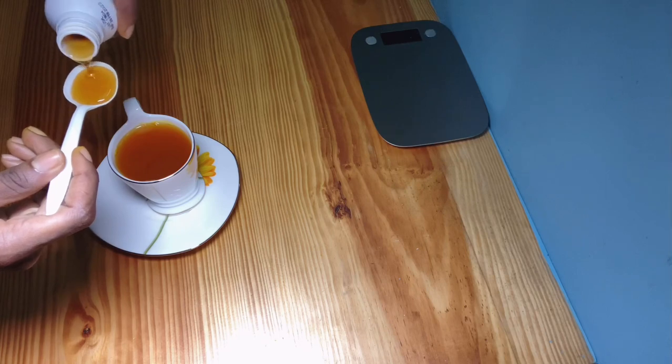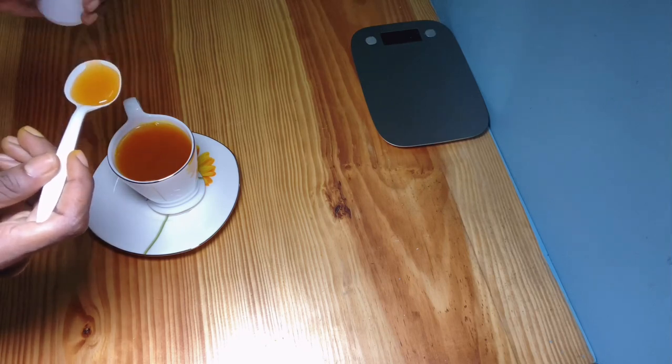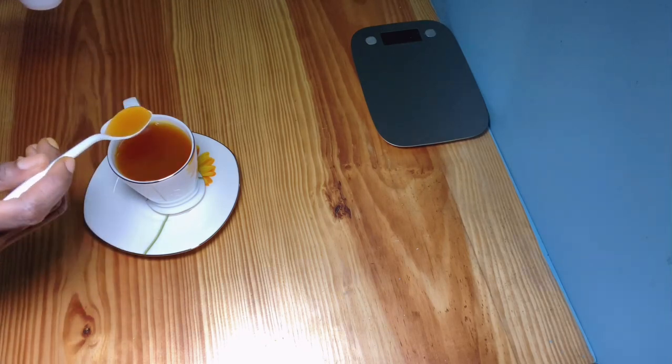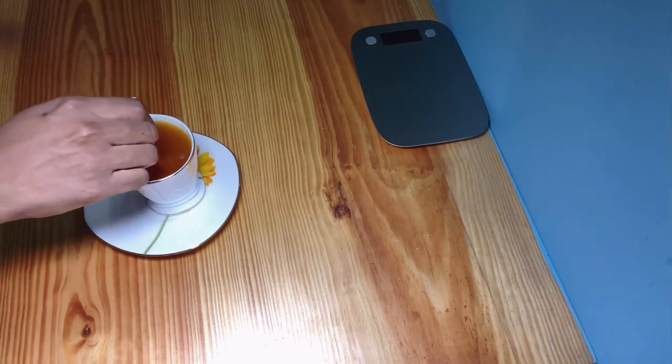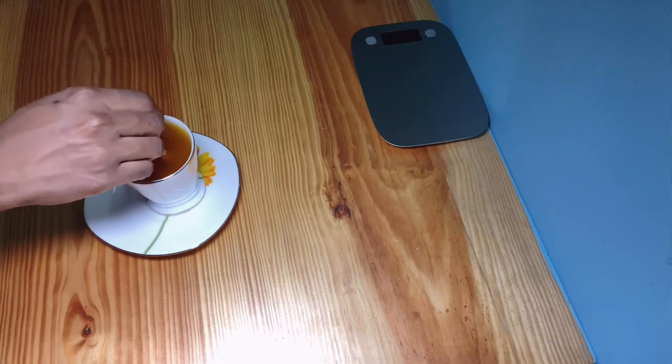For my turmeric tea, I added honey just to sweeten it a bit and give the mixture more antimicrobial properties. Comment below and let me know what additional ingredients you added to your turmeric tea.